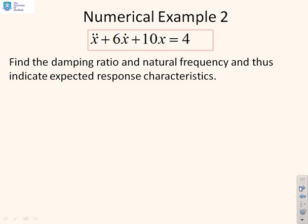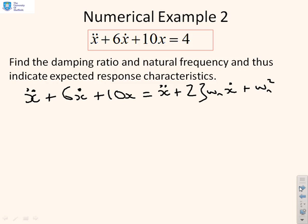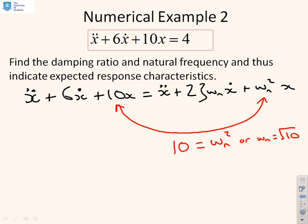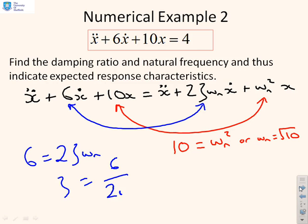Another example: ẍ + 6ẋ + 10x can be written as ẍ + 2ζωₙẋ + ωₙ²x. Match these two coefficients: 10 equals ωₙ squared, so ωₙ equals √10. Next match these two coefficients: 6 equals 2ζωₙ, so ζ equals 6/(2ωₙ) which is 3/√10.